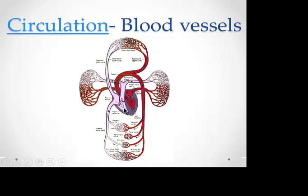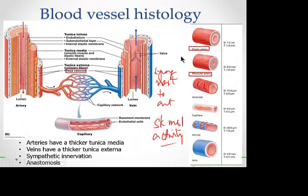The pulsations of the arteries are transmitted to the adjacent veins, helping push blood upward. Large veins throughout the body lie next to arteries, which are pulsatile due to their thick muscle wall. Valves and skeletal muscle activity also assist. Because these veins lie deep inside the legs and abdomen, when the skeletal muscle acts it squeezes the veins and pushes blood up towards the heart.